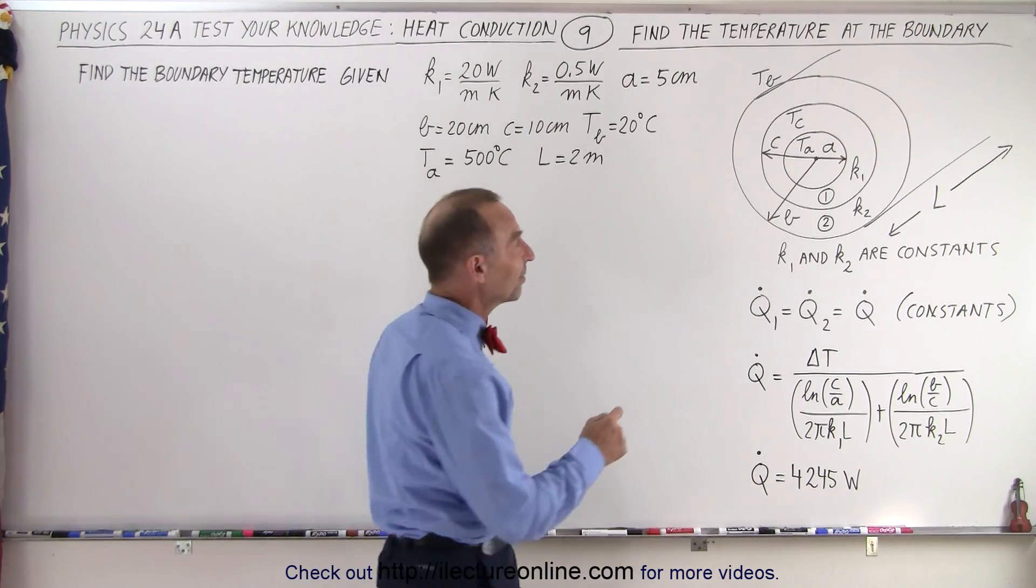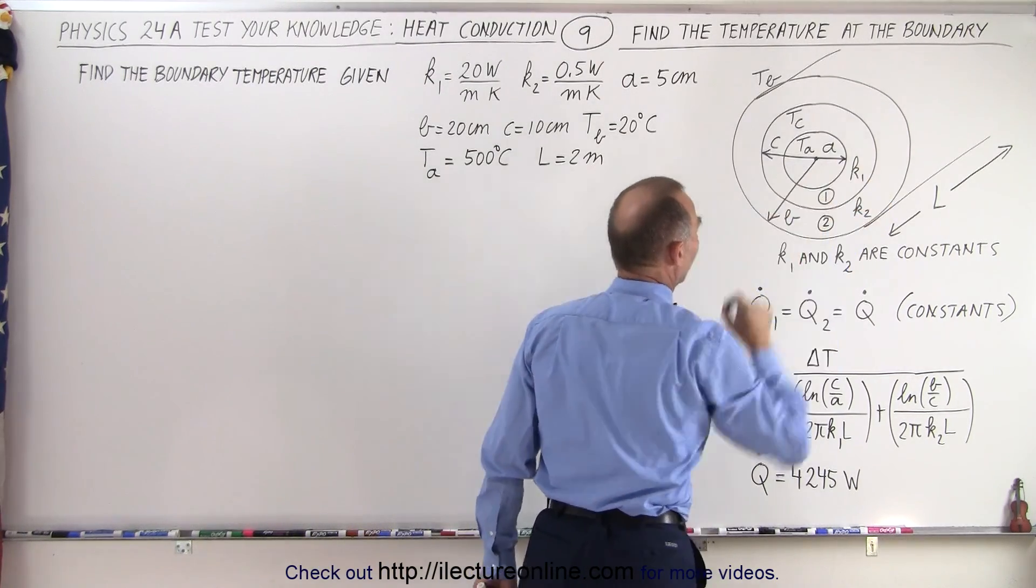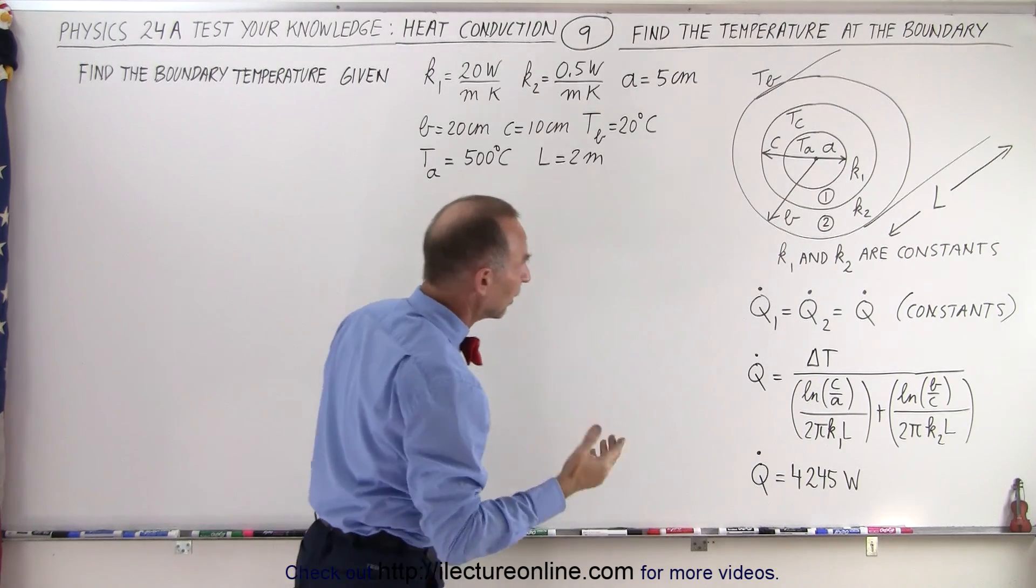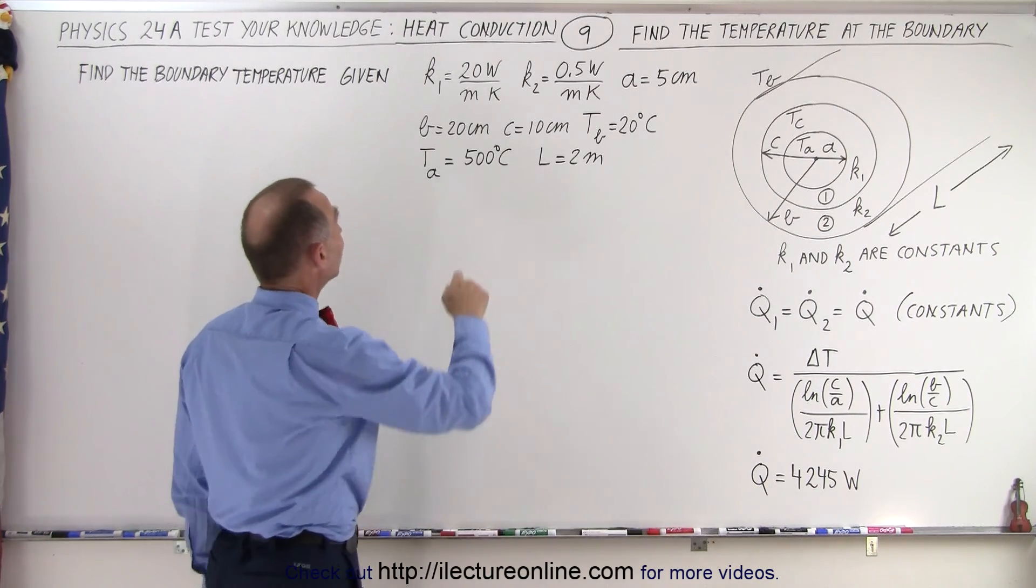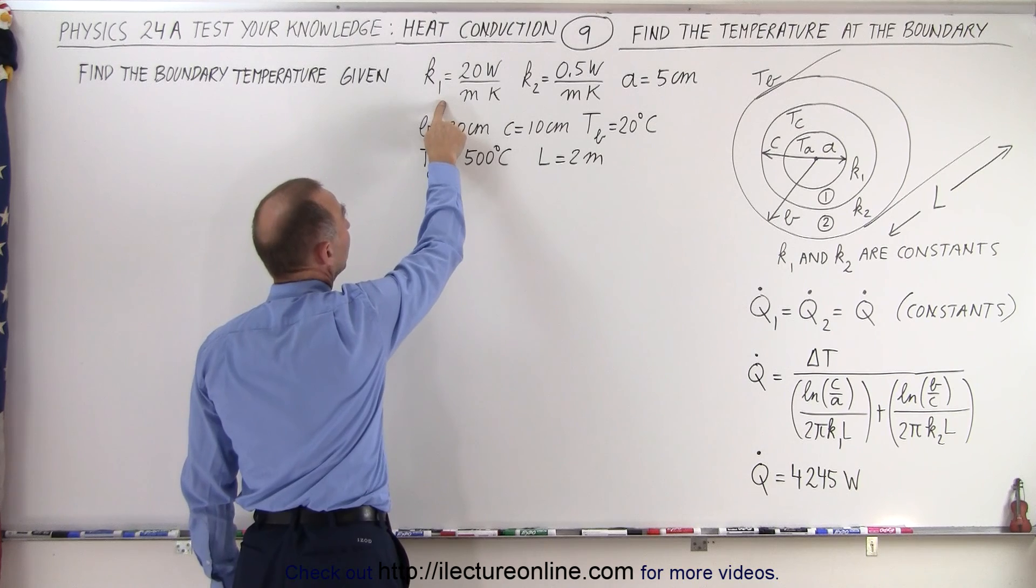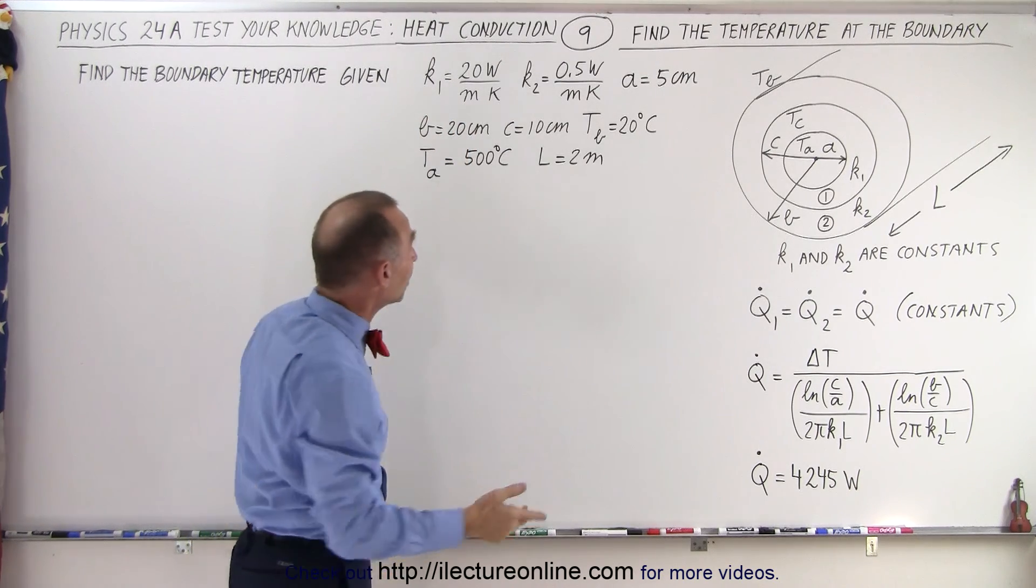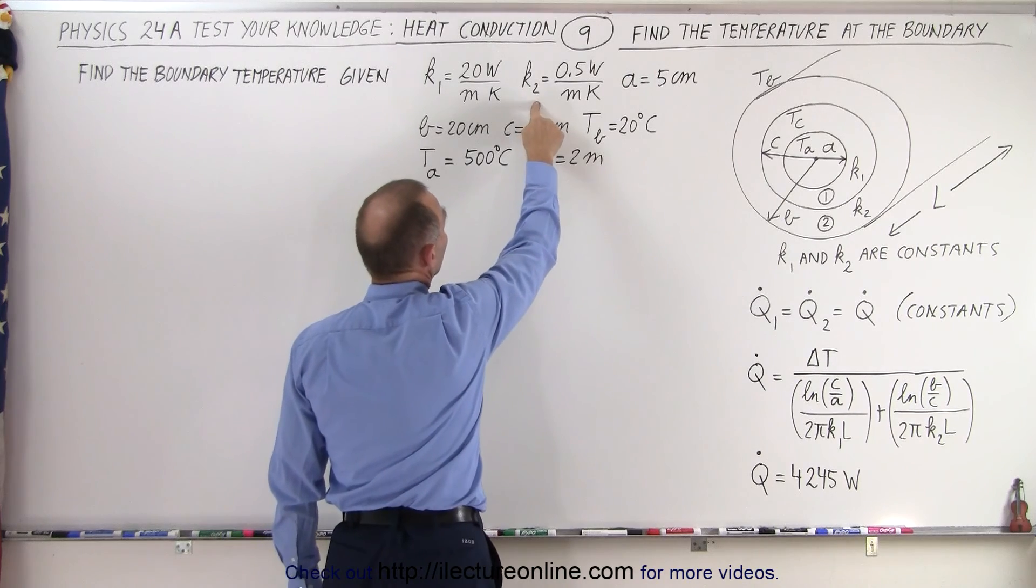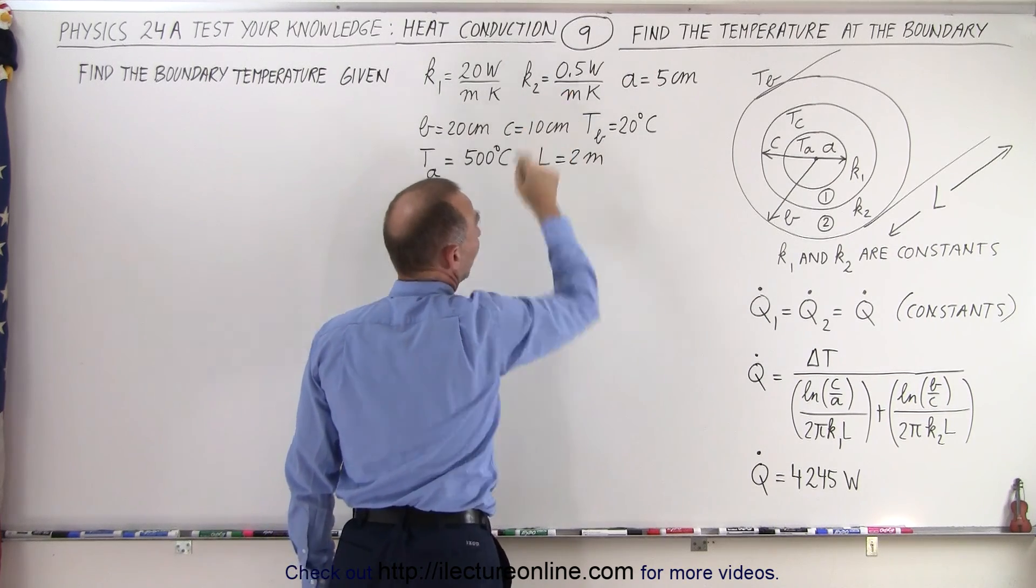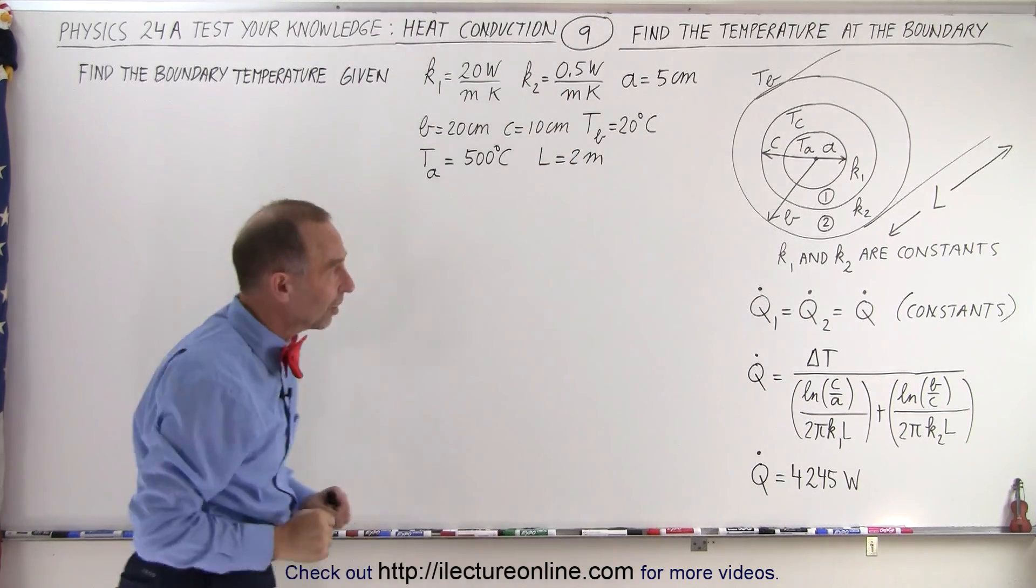Now what is the temperature at the boundary between the inside and the outside layer? And notice that the heat conductivity constant is quite large for the inside layer, presumably that's a metal, and the constant heat conductivity constant for the second layer is quite small, we presume that's an insulator.